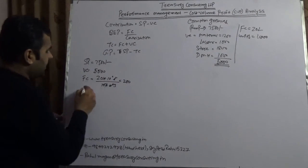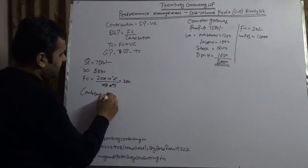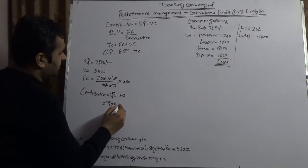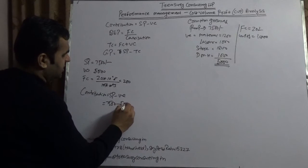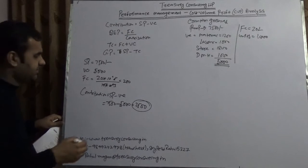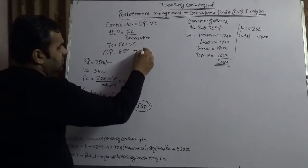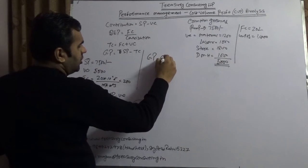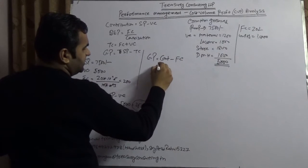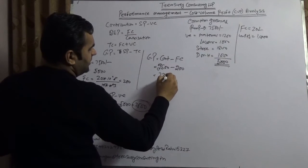What would be the contribution? Contribution would be selling price minus variable cost, $7,500 minus $5,000, which is $2,500. This is the contribution which a pump is giving to Crompton Greaves. Fixed cost is $2 per unit.